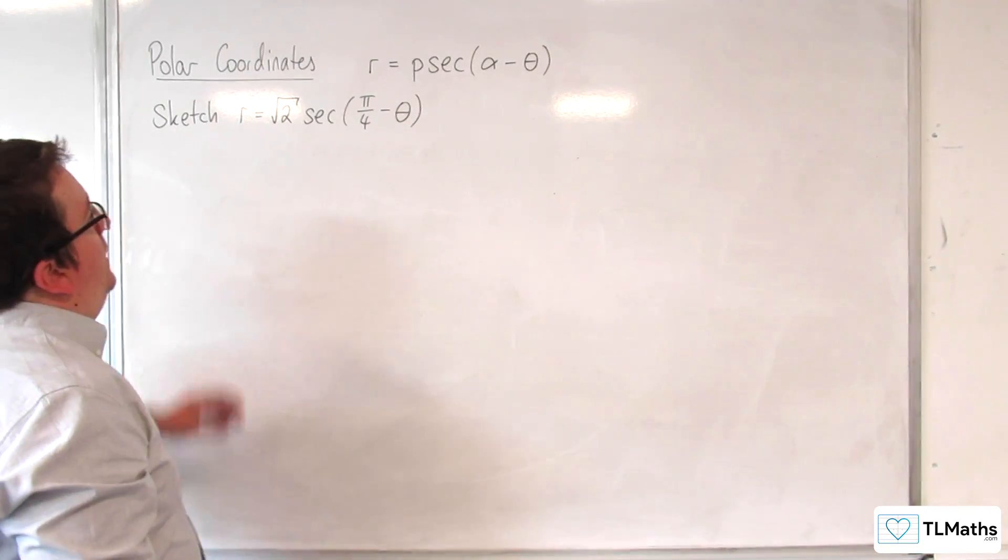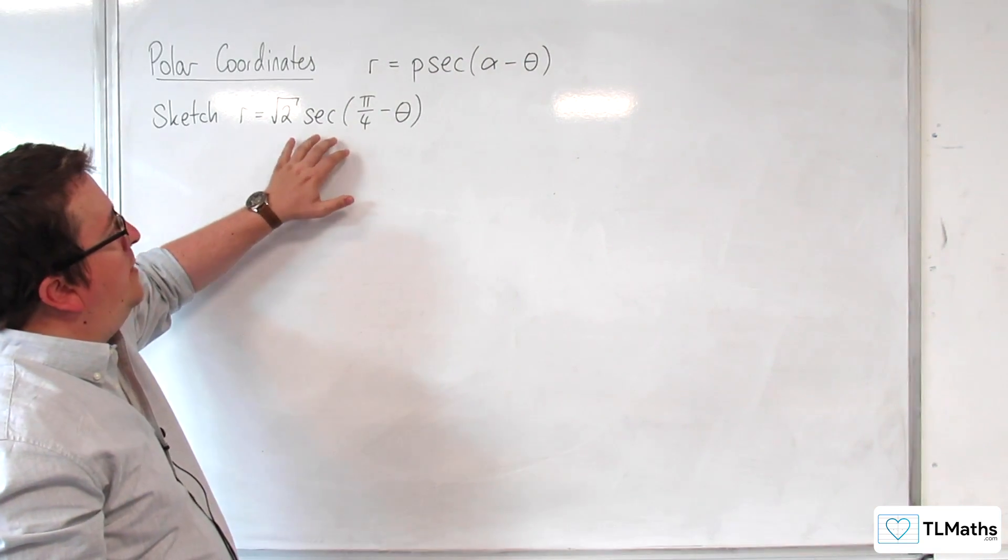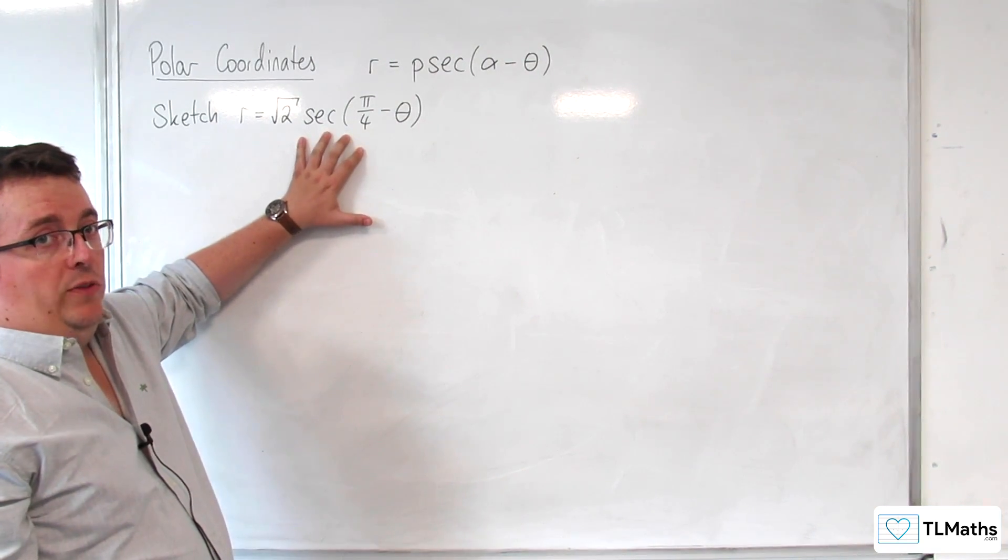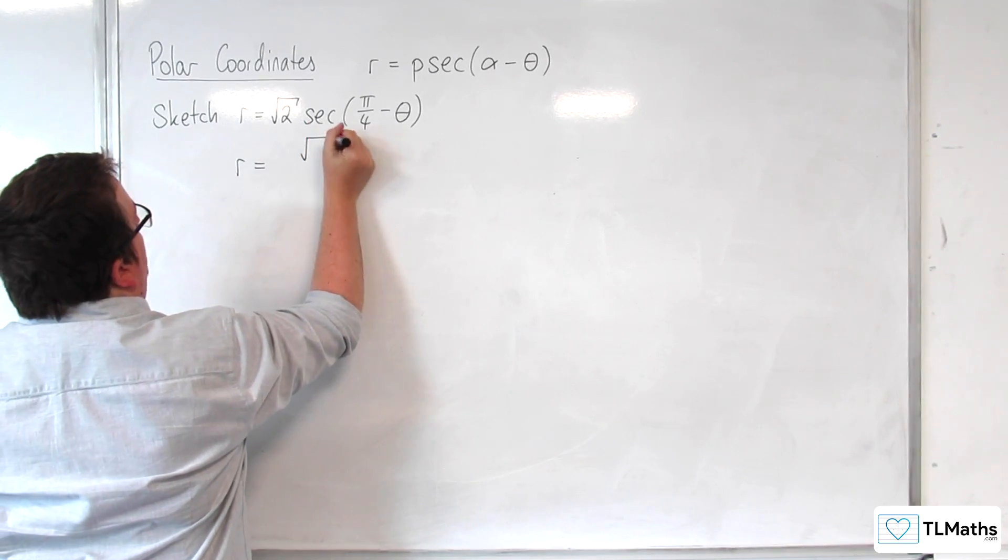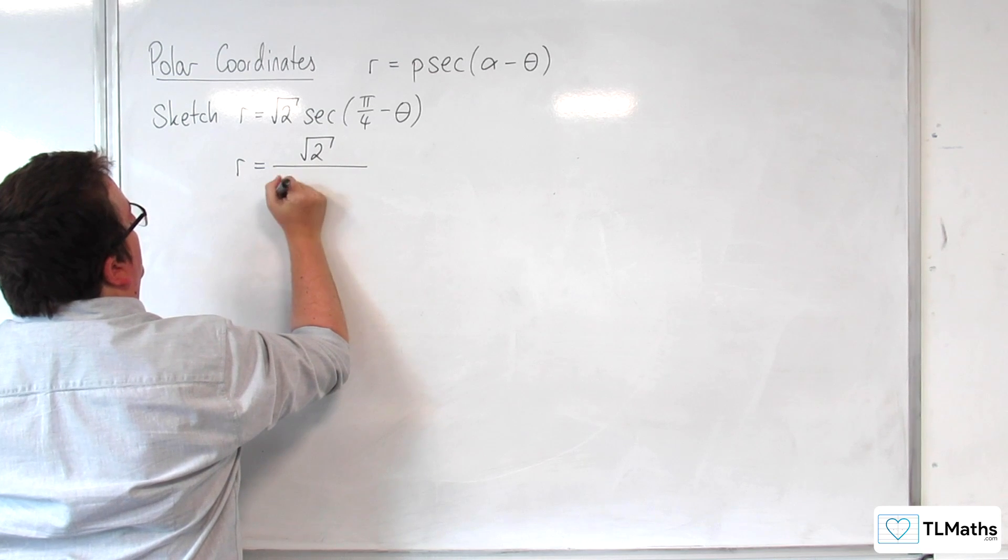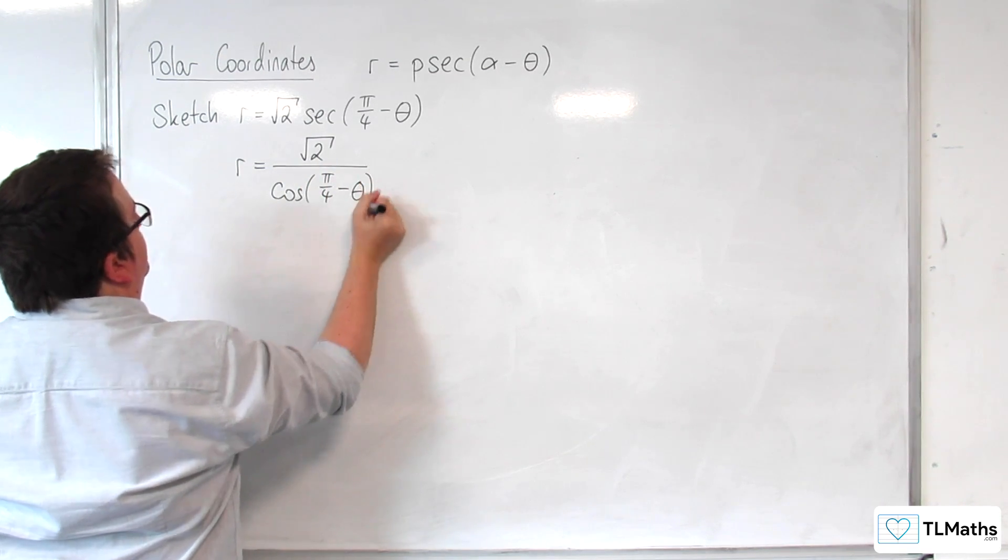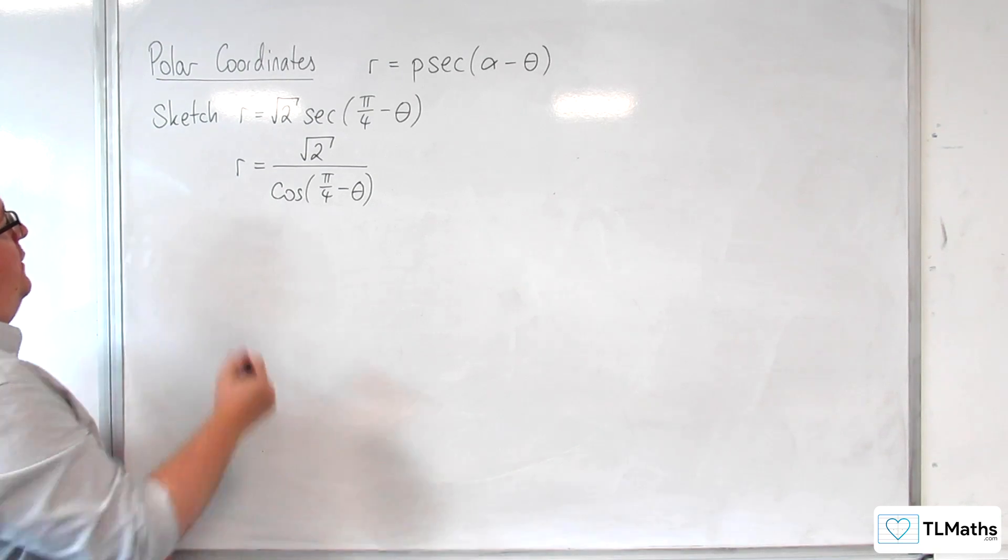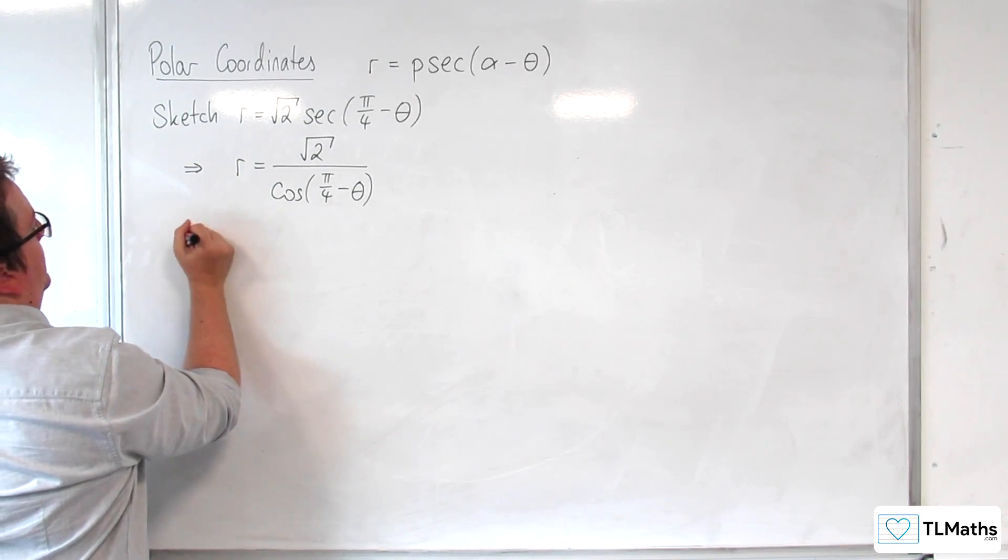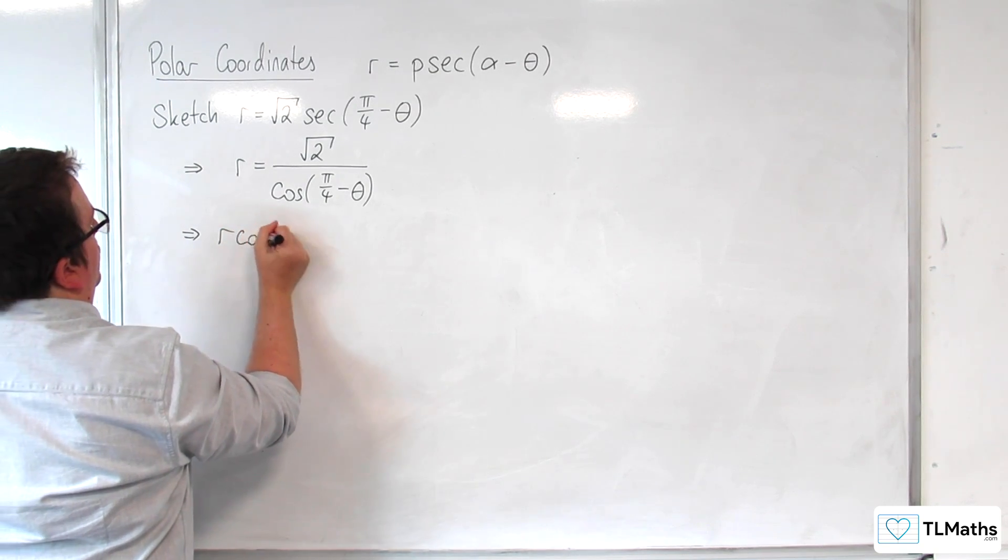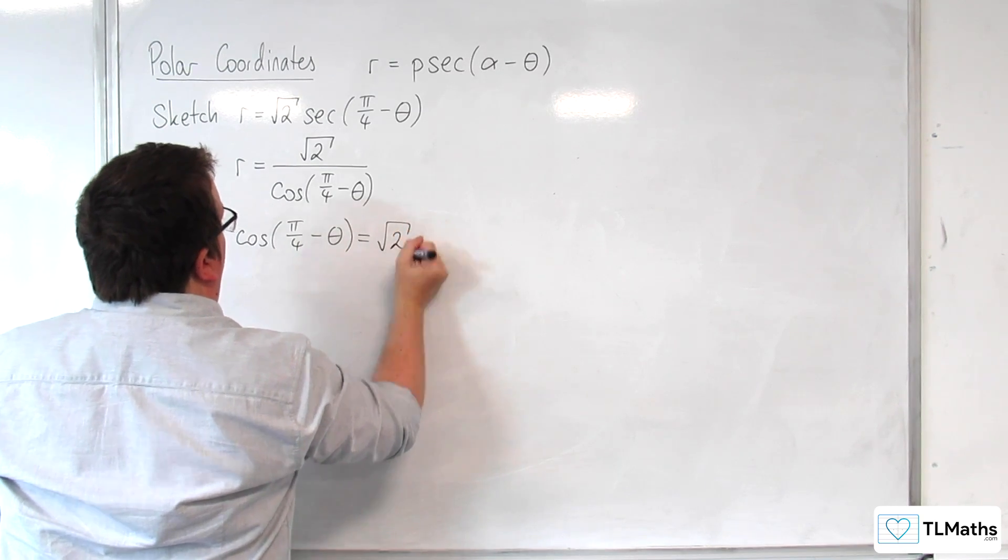So the first thing I would do here is I would think about replacing sec with cosine. So I'm going to write this as r equals root 2 over cosine of pi over 4 take away theta. Now let's multiply up by the cosine pi over 4 take away theta. So r cosine pi over 4 take away theta is equal to root 2.